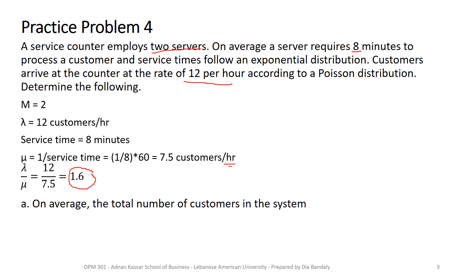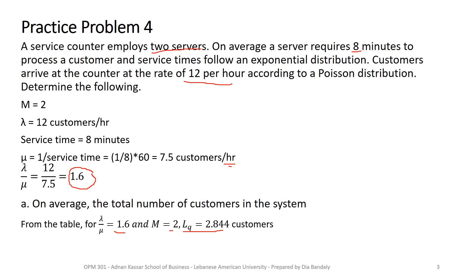First performance measure: the total average number of customers in the system, which is LS. We know LS = LQ + lambda/mu. From the table with lambda/mu = 1.6 and m = 2, we read LQ = 2.844. Adding lambda/mu = 1.6 — the number of people being served at any point — gives LS = 4.44 customers.